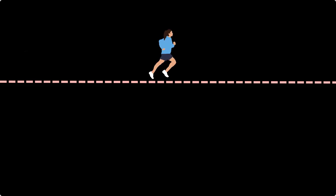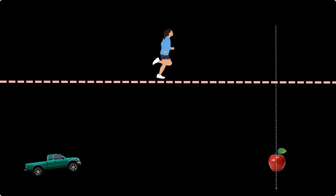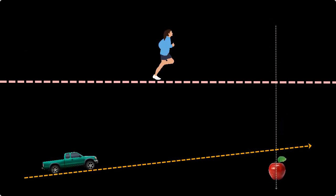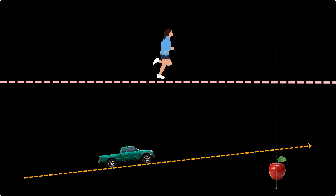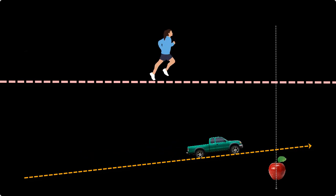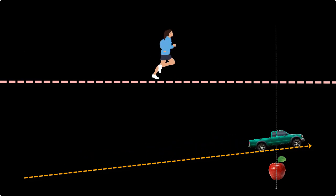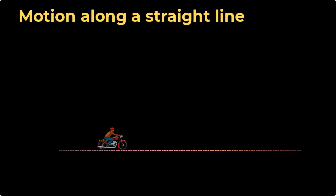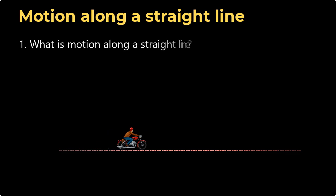What does a runner on a track, a falling apple, and a car moving up a hill have in common? Well, they all exhibit motion along a straight line. Hello everyone, so today what we learn in this lesson are three things. One, what is meant by motion along a straight line?